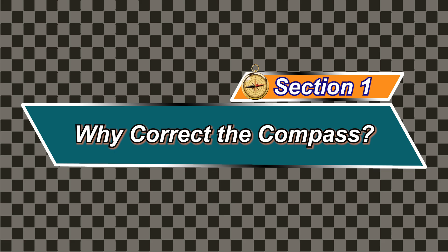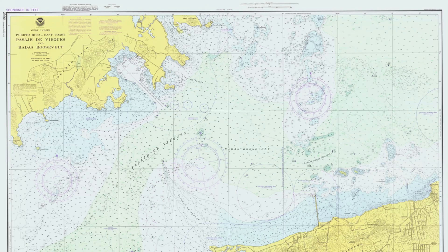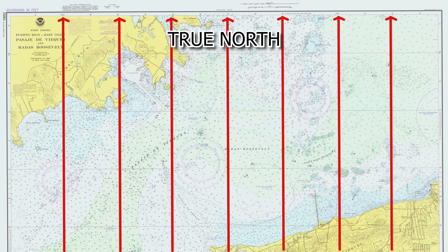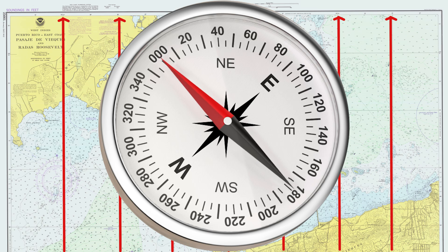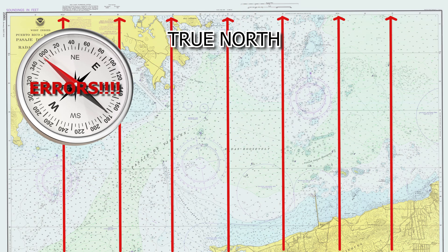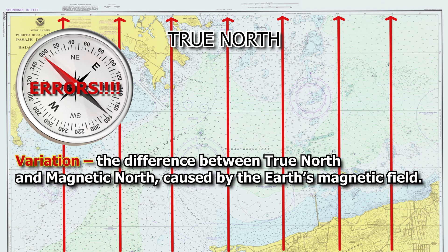Section 1: why correct the compass? Our nautical charts are always oriented to true north. But when we use the magnetic compass, errors can occur due to two main factors. Variation is the difference between true north and magnetic north, caused by the Earth's magnetic field.